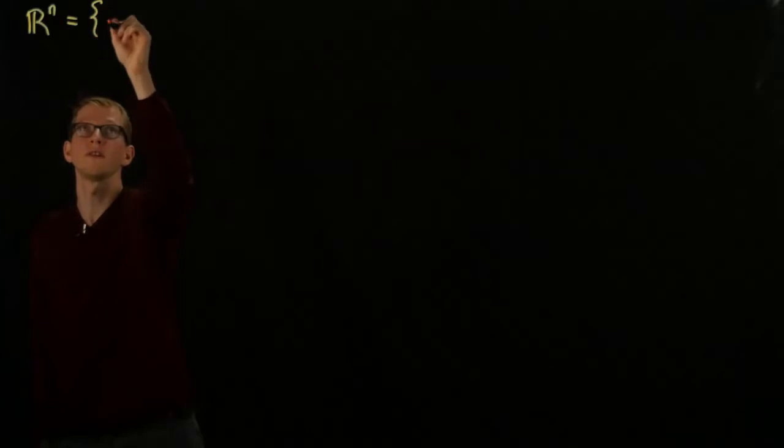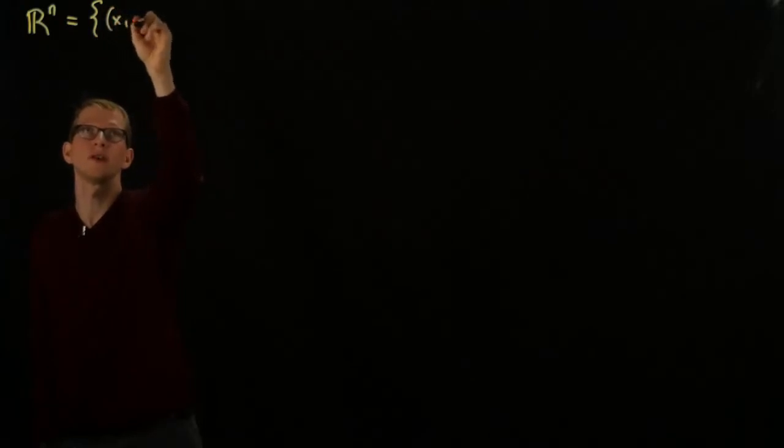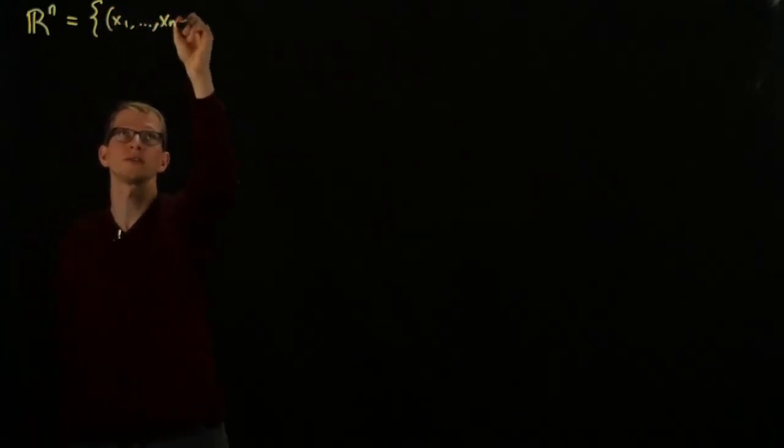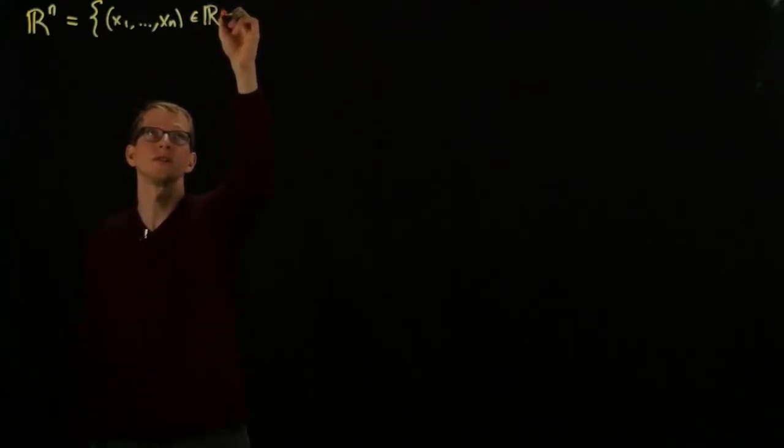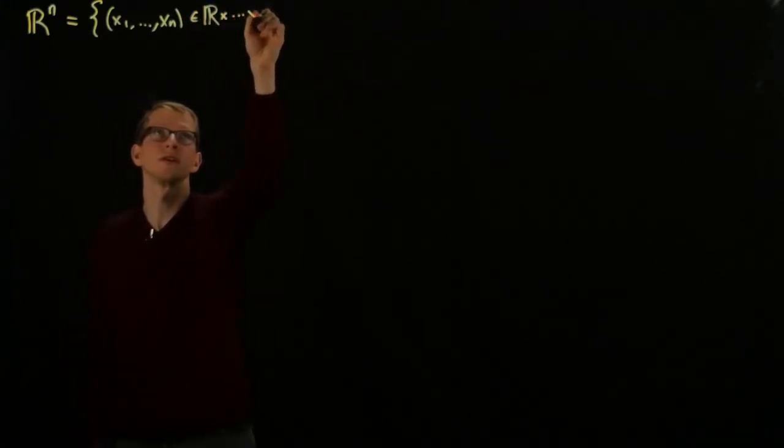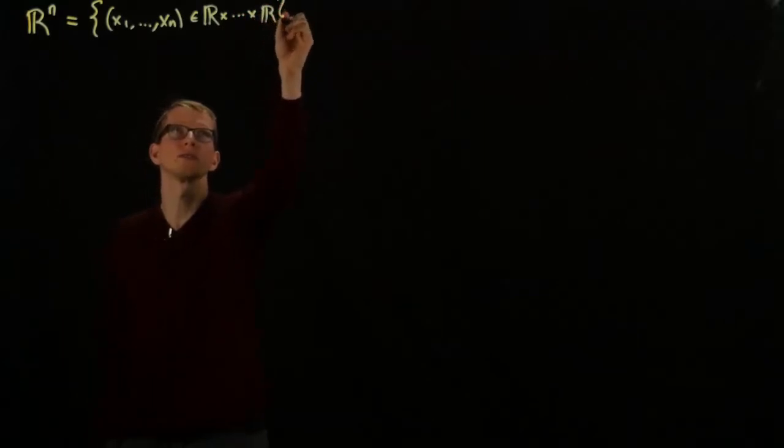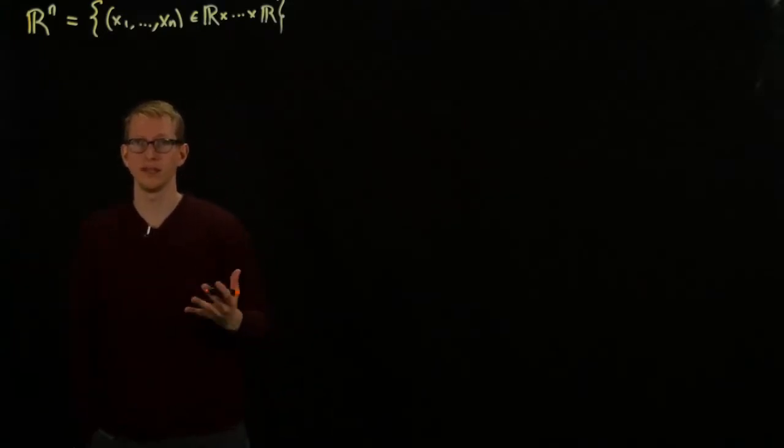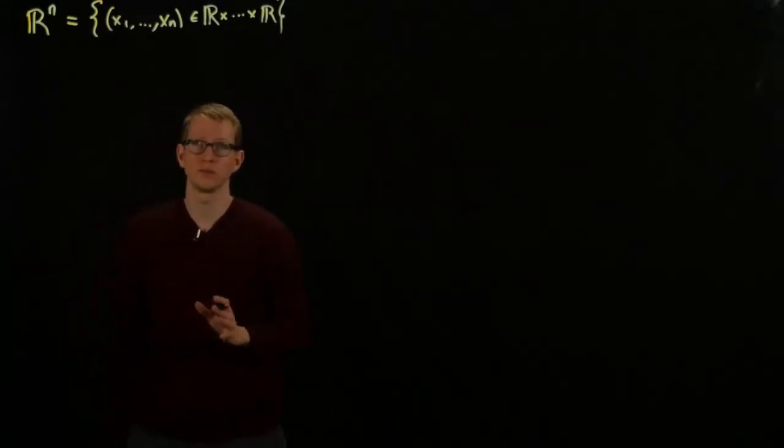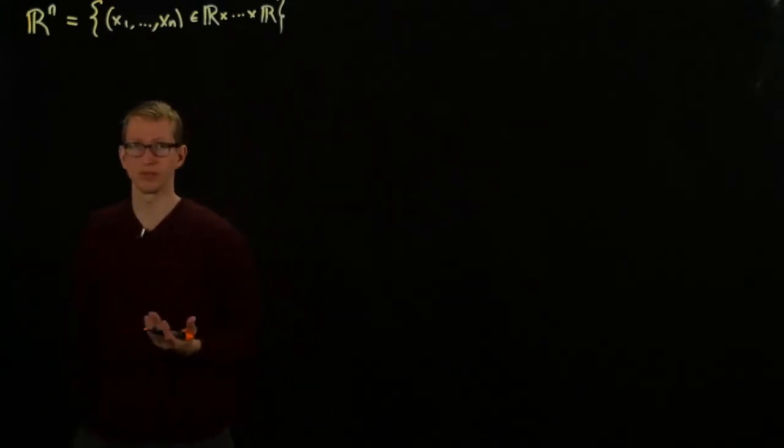Euclidean space in n dimensions. So this is going to be the set of points x1 up to xn in the product where there are n factors. And because we know that the product is essentially unique, it doesn't really matter how we write it, as long as we're consistent.